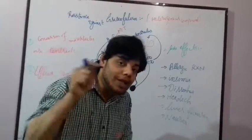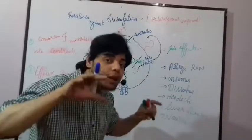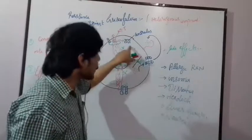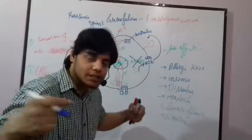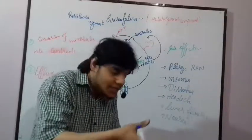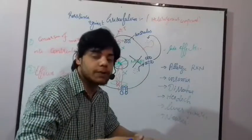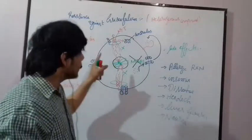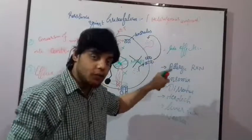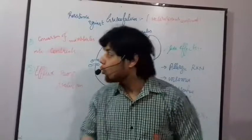Griseofulvin attacks microtubules at the time when the microtubules perform their function — that is, when they produce the spindle fibers. Although microtubules are present in centrioles, they are not attacked there because in the centrioles the microtubules are not producing spindle fibers. That is why griseofulvin is not effective on our own cells but is effective on fungal cells.